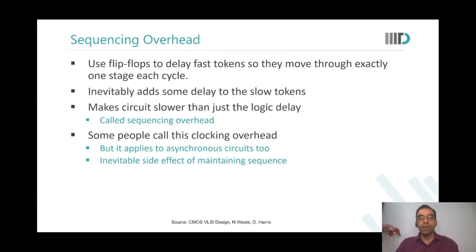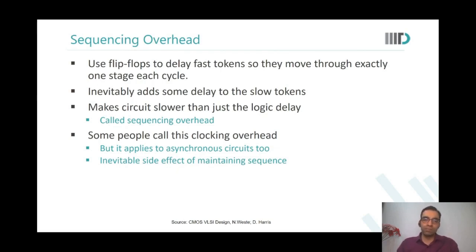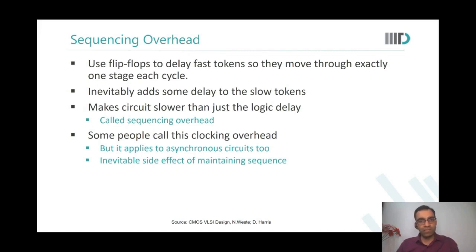When we use sequencing elements in our paths, we inevitably add flip-flops and latches, which will inevitably lead to additional delays even on the slower paths. You wanted to slow down only the fast path, but if you don't know which path is slow and which is fast during system synthesis, you simply insert a flop on all paths and even the slow paths will see some delay.